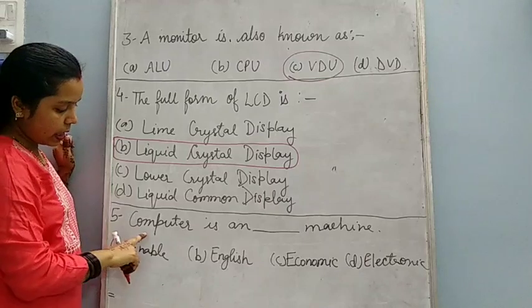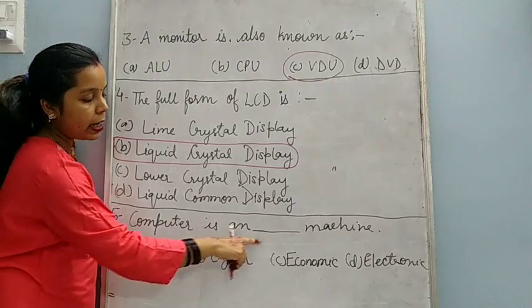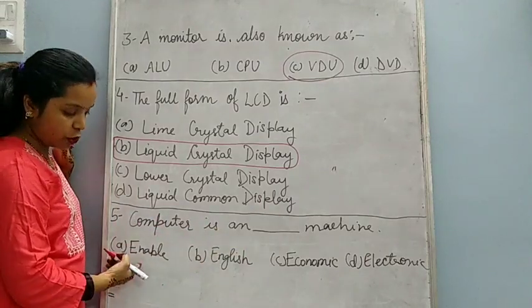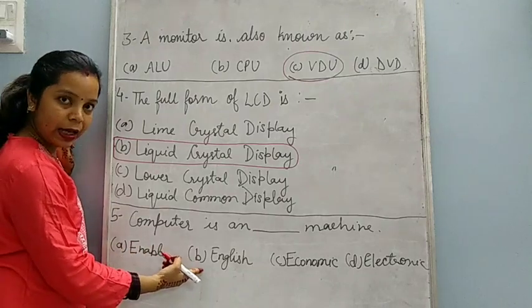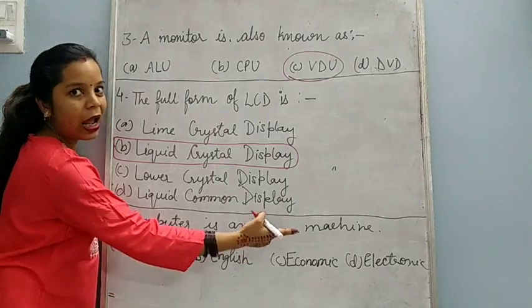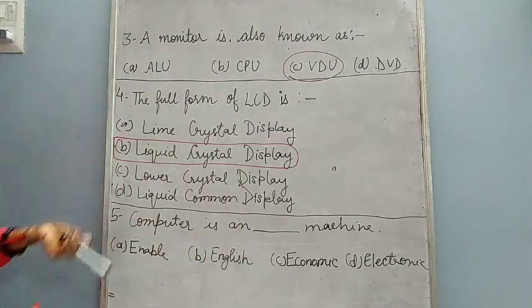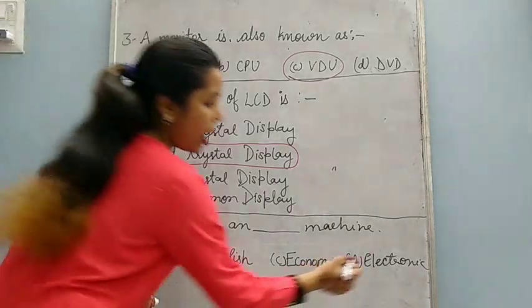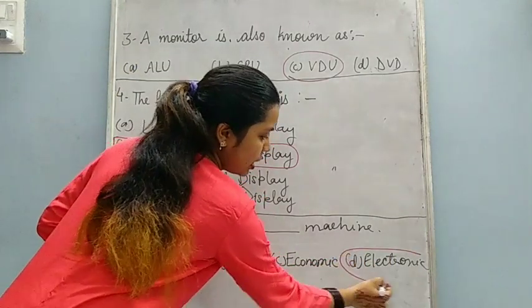Fifth question is, computer is an ____ machine. Your options are Enable, English, Economic, Electronic. Now computer is an electronic machine. So this is the correct answer.